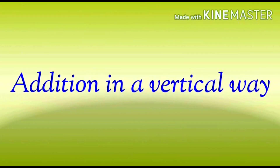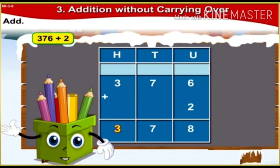Now we will start with addition in a vertical way. First sum: add 376 plus 2. Arrange them in vertical order — under hundreds write 3, tens write 7, units write 6, plus 2. Begin from the units column: 6 units plus 2 units is 8 units. Tens column: we have 7 tens, so write 7. Hundreds column: we have 3 hundreds, so write 3. The answer is 3 hundreds, 7 tens, 8 units — that is 378.